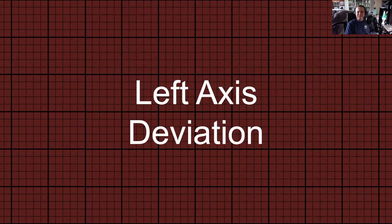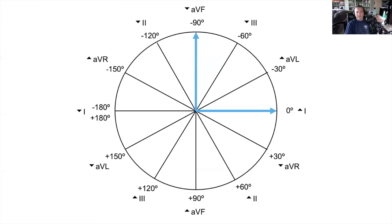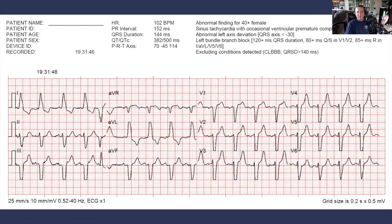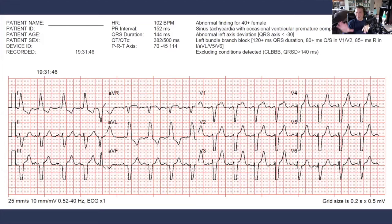Let's talk about a pathologic left axis deviation — we're in the left superior quadrant between negative 30 and negative 90 degrees. This is a perfect example of why it's important to learn axis. Looking at this ECG, the first thing I would try to rule out is a paced rhythm, because you have a wide QRS complex with left bundle branch morphology in lead V1, a left axis deviation, and negative concordance in the precordial leads. We'll cover all this in later videos, but this is why you learn axis.